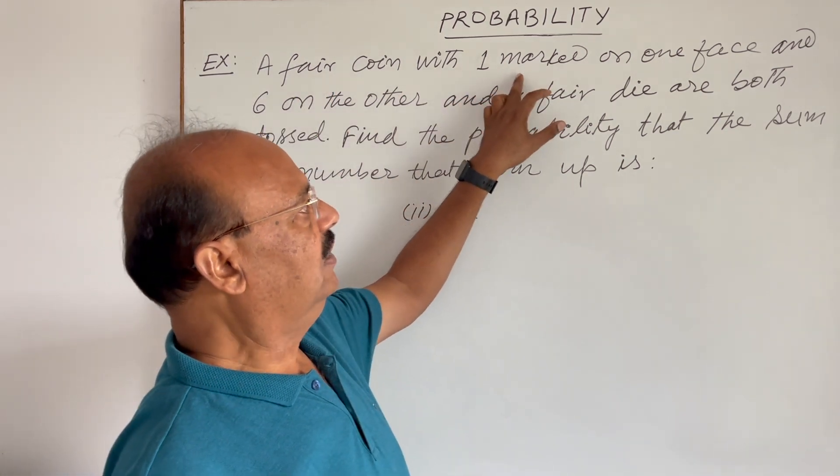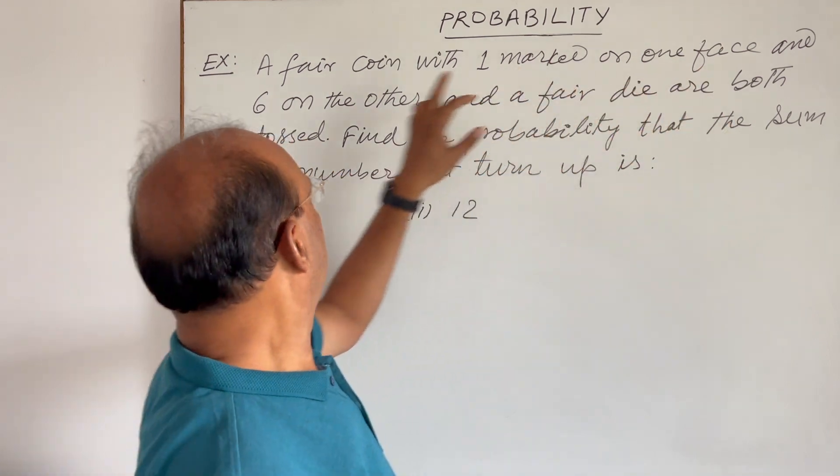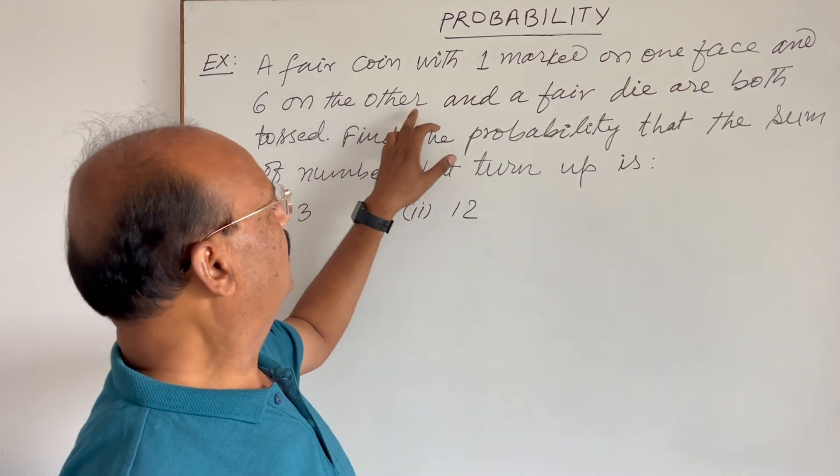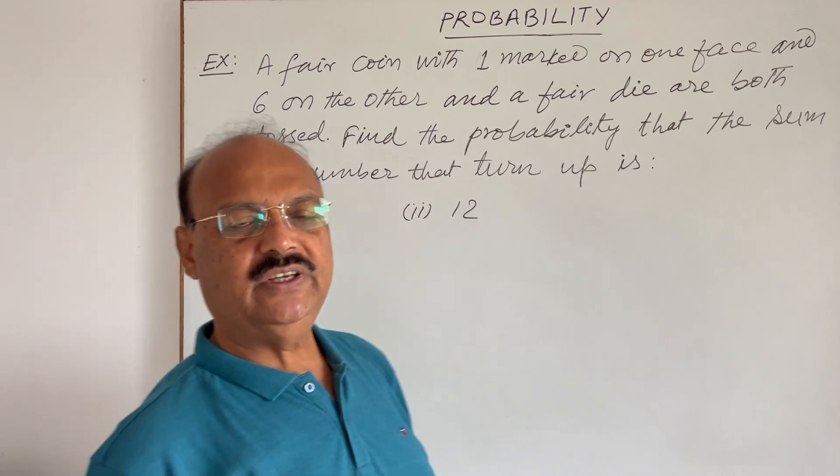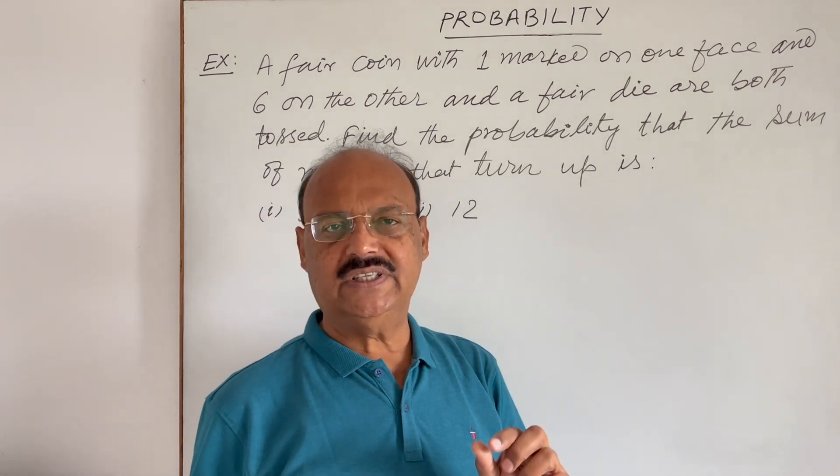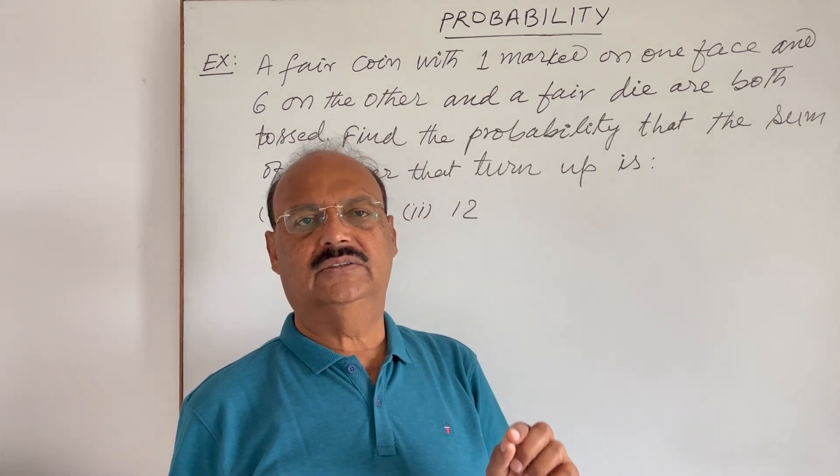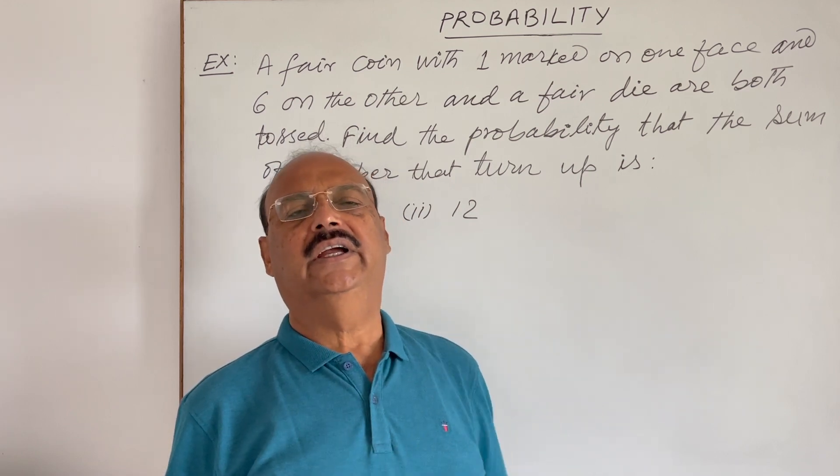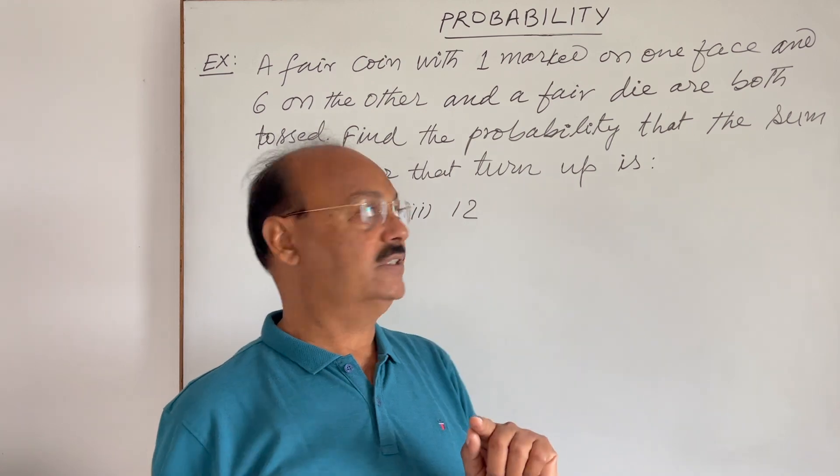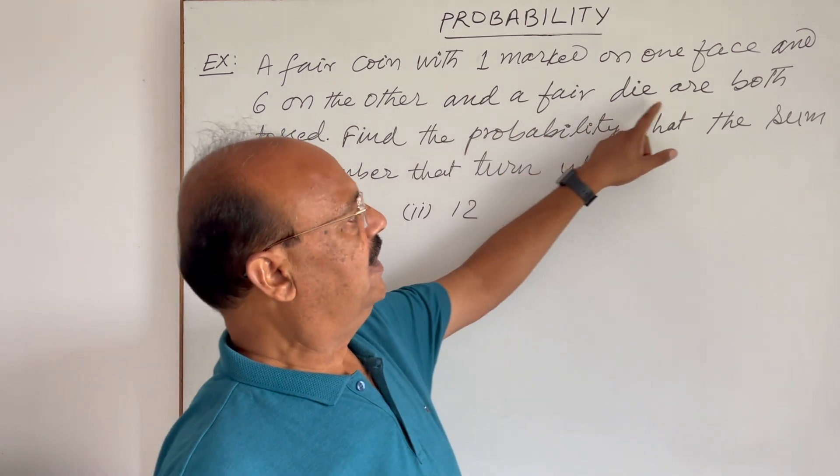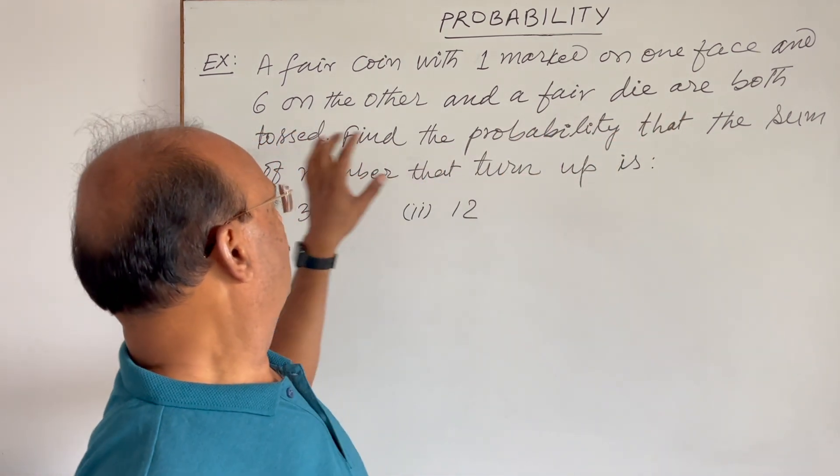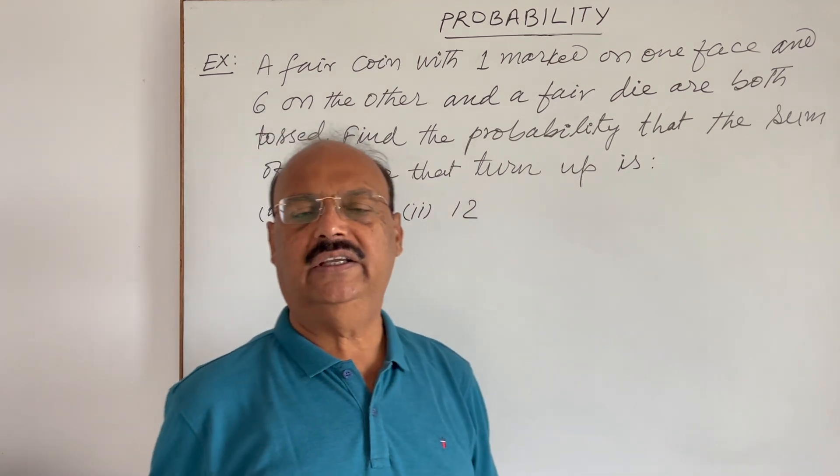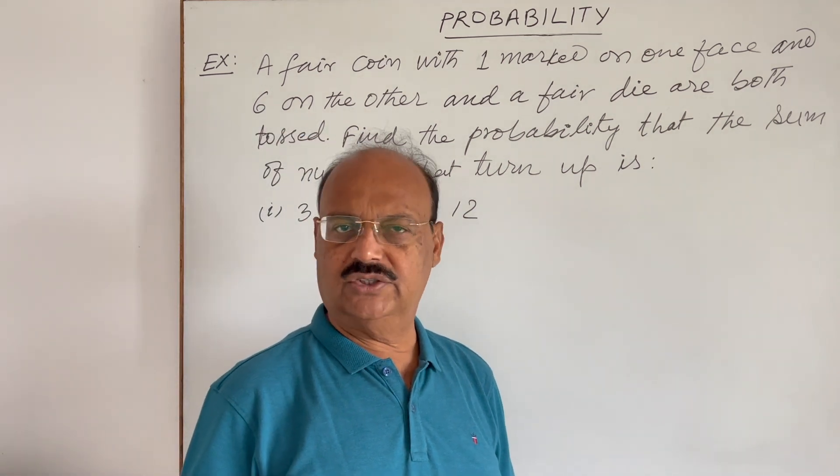Here the question is: a fair coin with one marked on one face and six on the other. What does it mean? The coin is having two faces. So on one face we have marked one, number one is written there, and six on another face. And a fair die are both tossed. Coin and die, both are tossed together.